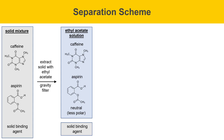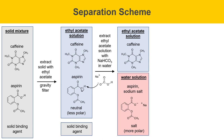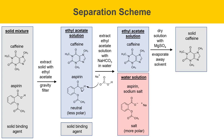Next, we separate caffeine and aspirin from the ethyl acetate solution by extracting it with sodium bicarbonate and water. Sodium bicarbonate abstracts a proton from aspirin to create the aspirin-sodium salt, which moves into the water layer at the bottom since water is denser than ethyl acetate. The ethyl acetate layer retains neutral caffeine, unchanged. We then dry that ethyl acetate solution of caffeine with magnesium sulfate to remove water, and evaporate the solvent to give solid caffeine as one isolated component.